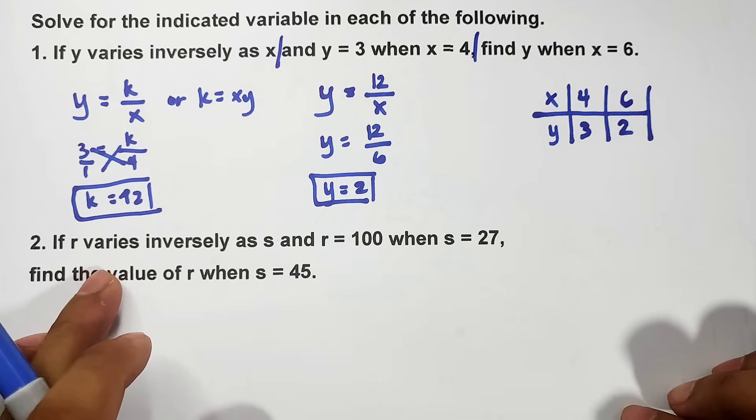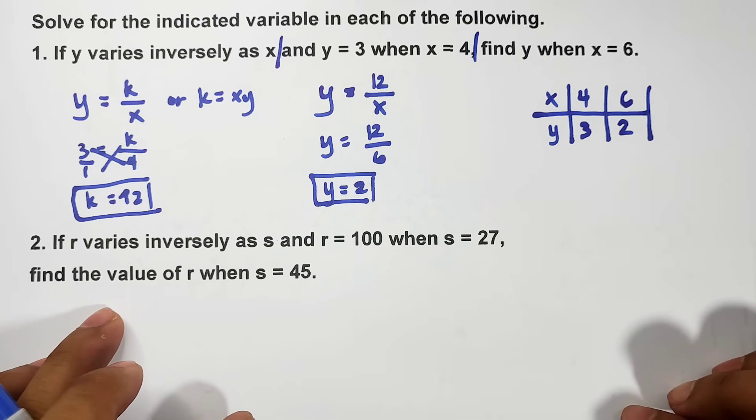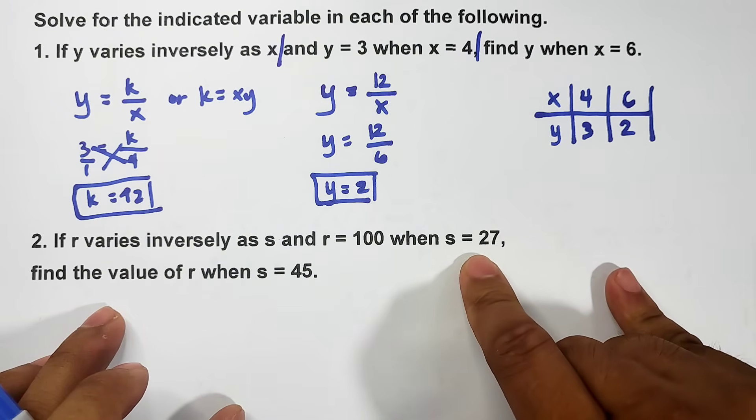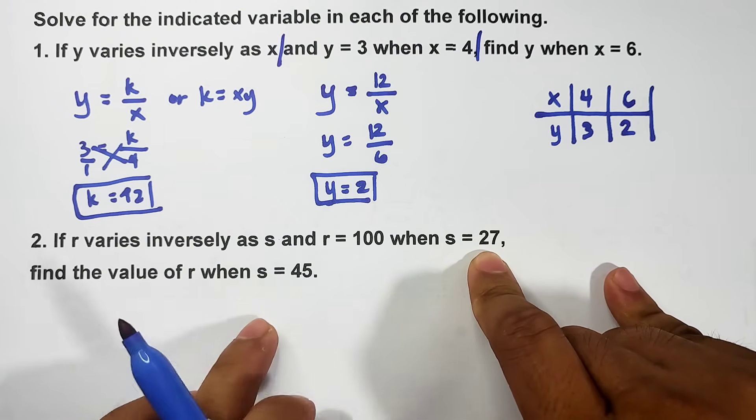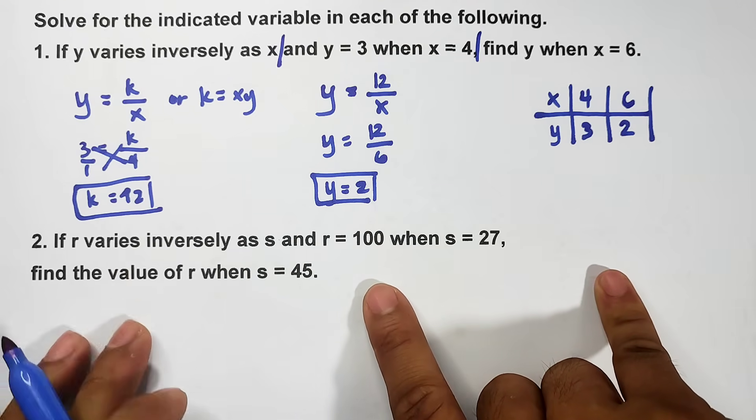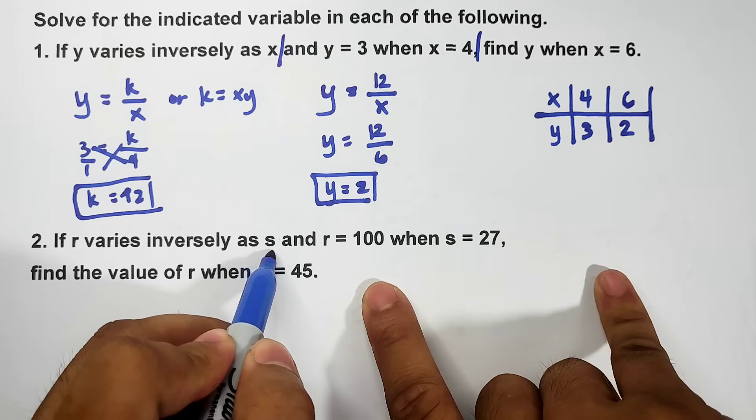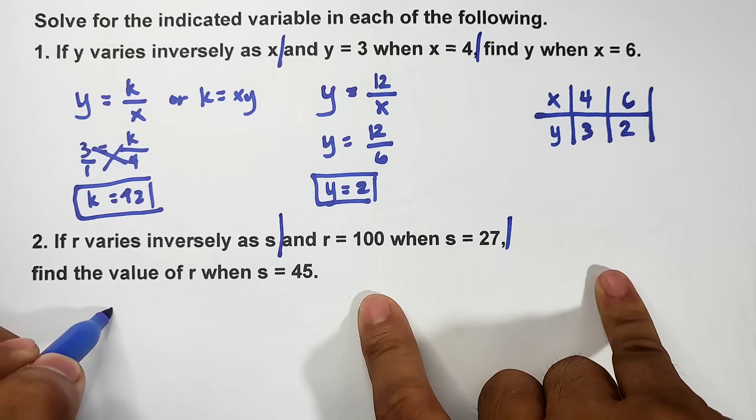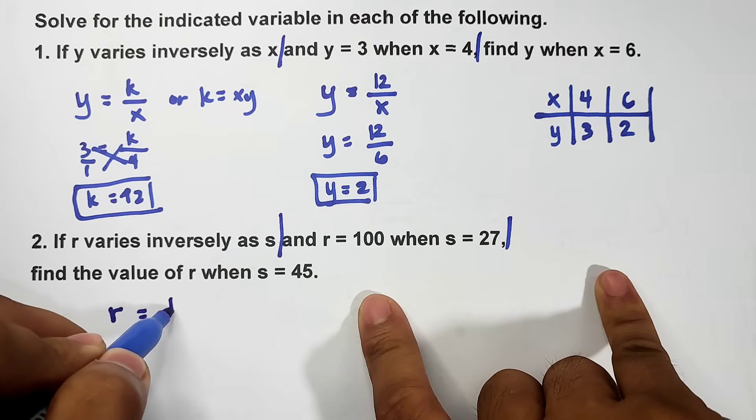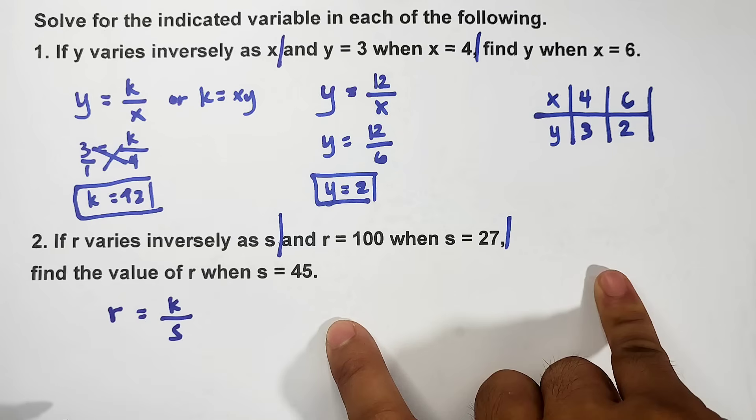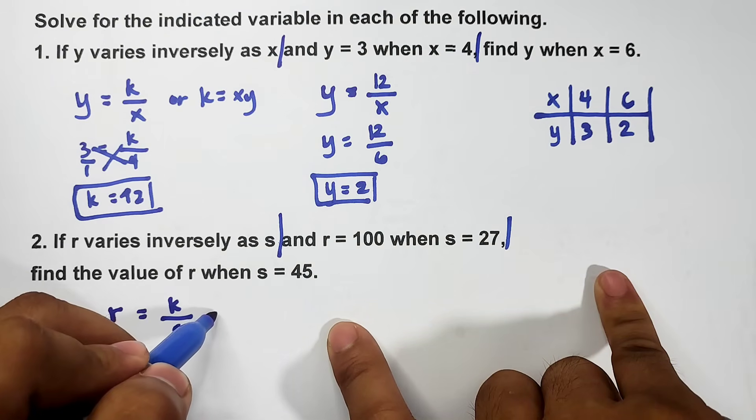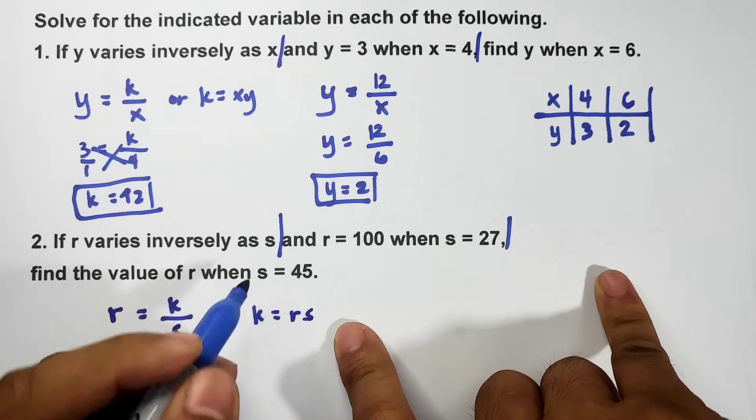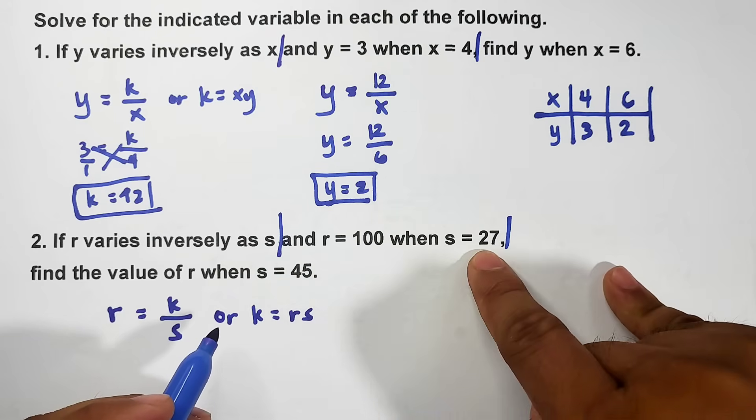Let's move on with number 2. If r varies inversely as s, different variables now, and r equals 100 when s equals 27, find the value of r when s equals 45. This one is quite big but let's try. Inverse variation first - chop it here, here, and this is the last. Let's make an equation: r equals k over s. Or to find the constant easily, multiply the two: k equals rs.